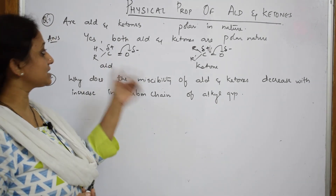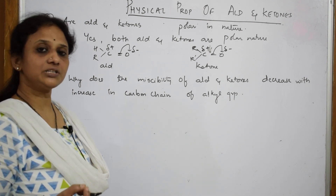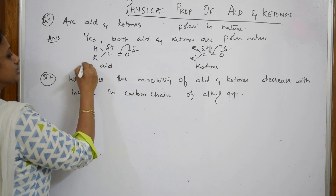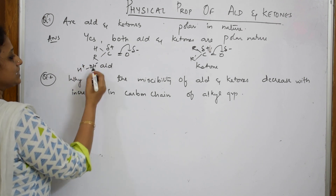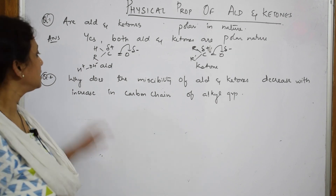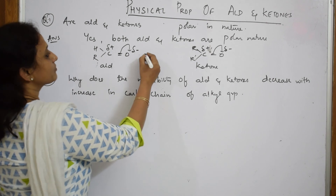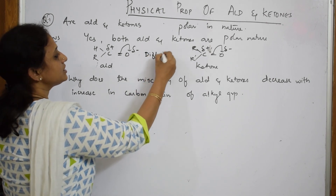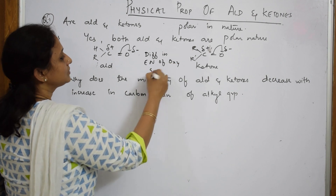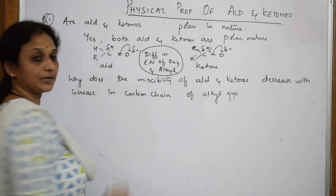Because of this polar nature, it is easy to dissolve aldehydes and ketones in water — miscibility. When you have H⁺ and OH⁻, they can easily attract the dipoles and dissolve by forming hydrogen bonds. Your answer should be completed by showing the difference in electronegativity of oxygen and alkyl groups.